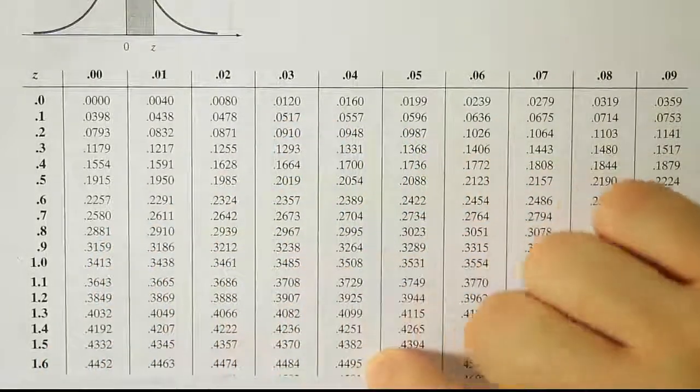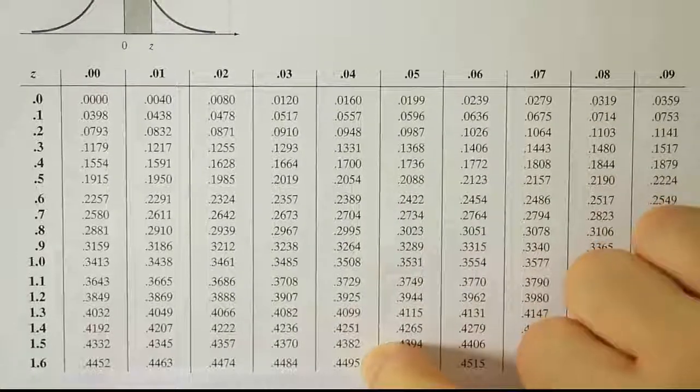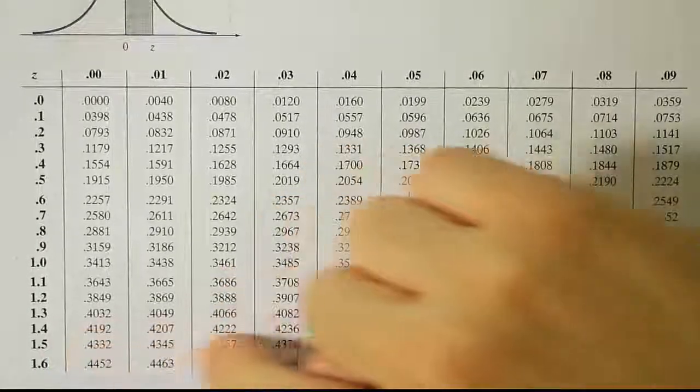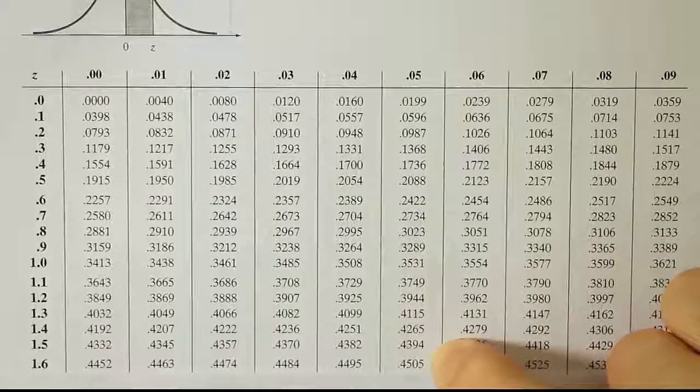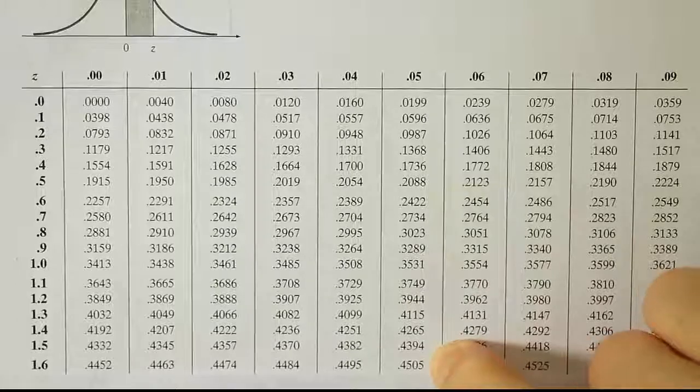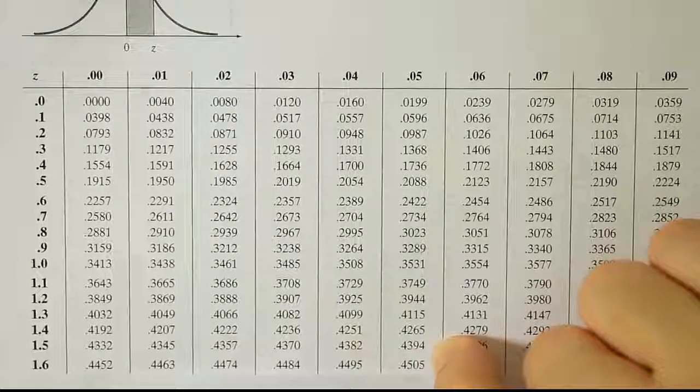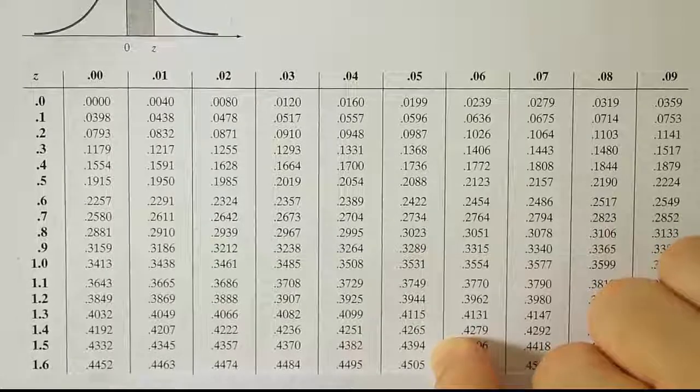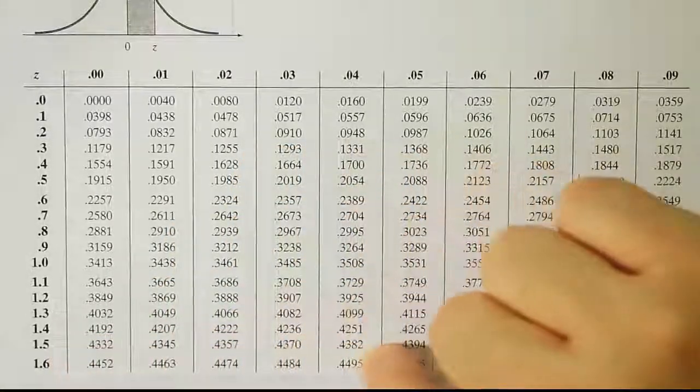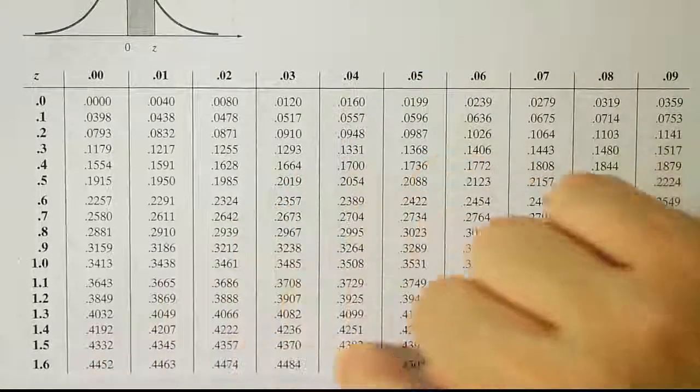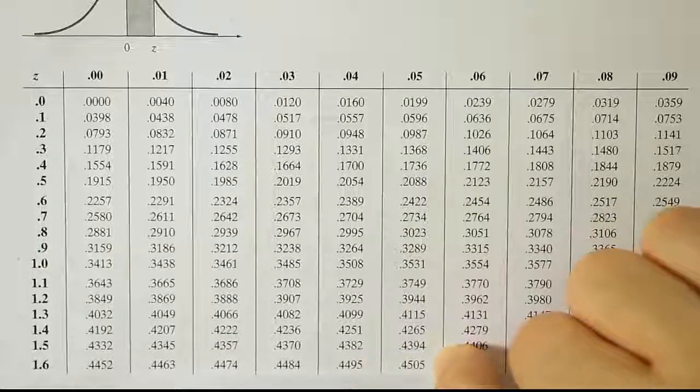So let's look in the 1.6th row and see if we find anything that's close to 4500. When I go across, I see the number 0.4495. That's only five ten-thousands away. If I go across to this number, 4505, I see that's also five ten-thousands away. So we don't have a closest value. These are equally close to the number we need. So what we're going to do is take both z-scores with us back to our problem. So we're going to use 1.64 and 1.65.